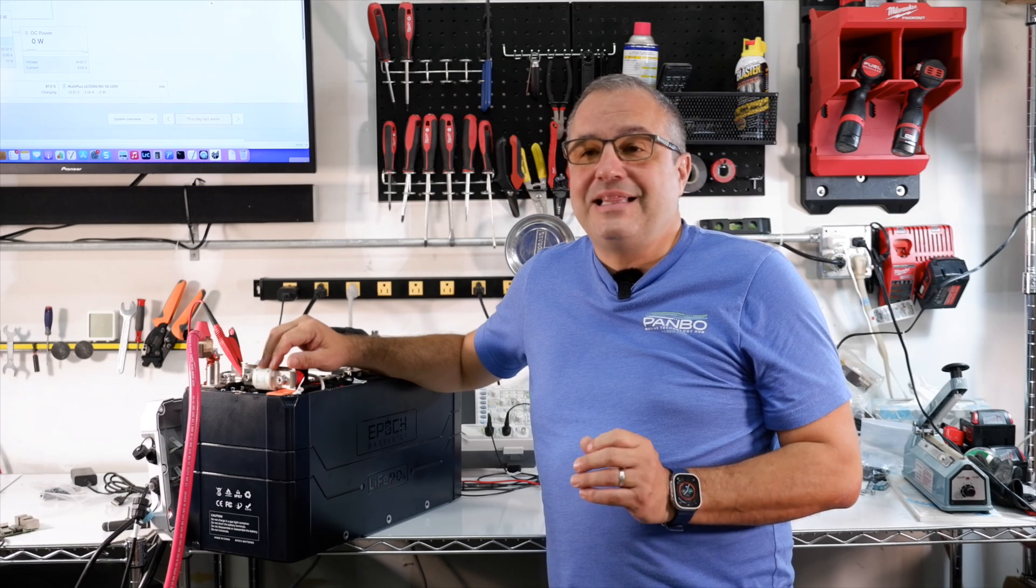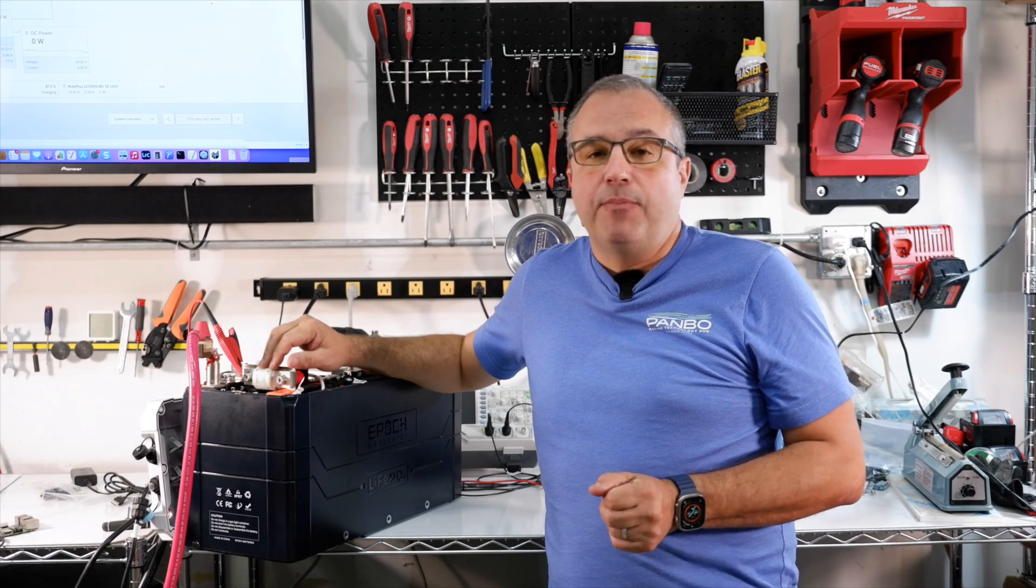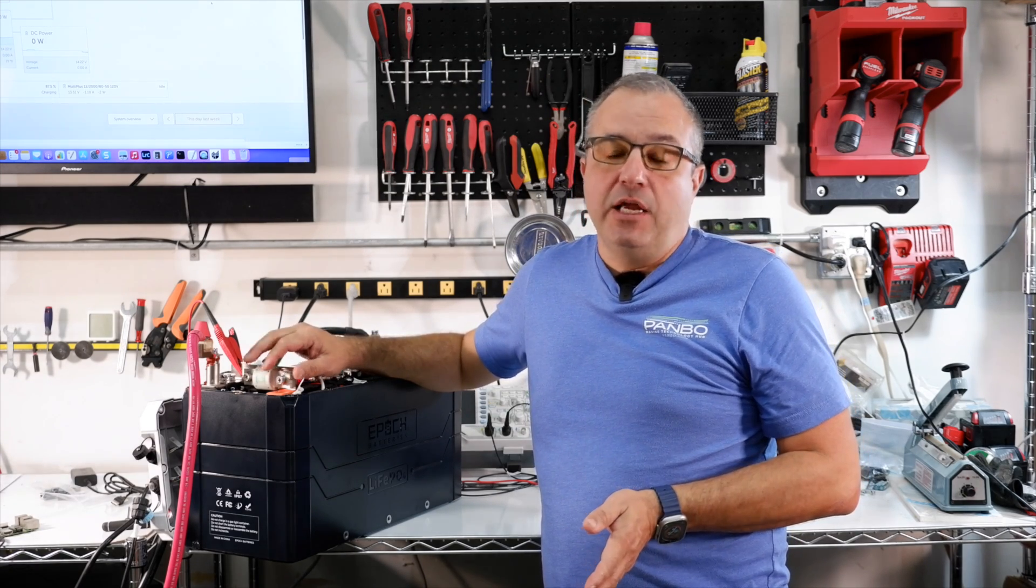The reason for that is the Class T has an amp interrupt rating of 20,000 amps. What that means is that even with a load of 20,000 amps, the fuse will blow and it will blow into an open position. Fuses with a smaller AIC or amp interrupt capability rating may weld themselves shut under a greater load. That would obviously be very dangerous because now your over current protection has failed to open and has in fact welded itself closed.